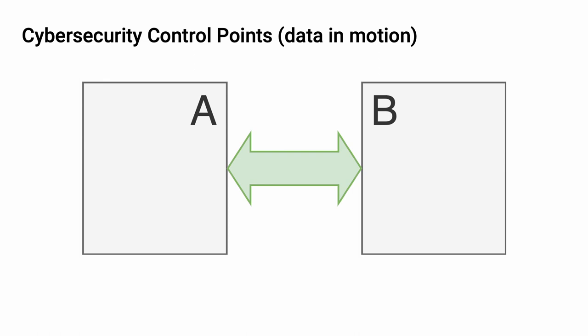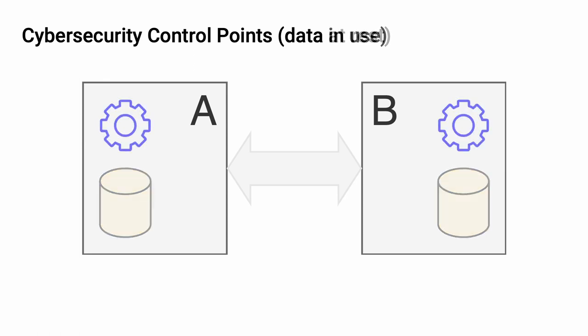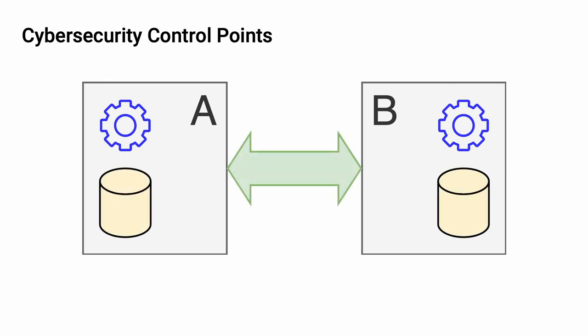The second place of control is for data storage — data at rest. Here we're thinking about controls applied either through an access control list type system or using mechanisms such as cryptography. Finally, we're going to address data in use. That's when you have sensitive information that's being processed. How do you address that?